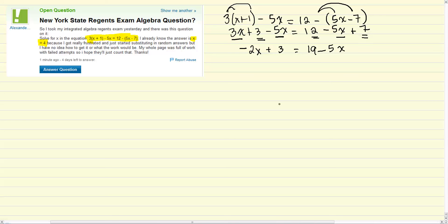Next step, let's add 5x here to both sides. It's going to give us 3x plus 3 equals 19. Subtract 3 from both sides. 3x equals 16. Divide by 3. x equals 16 over 3.